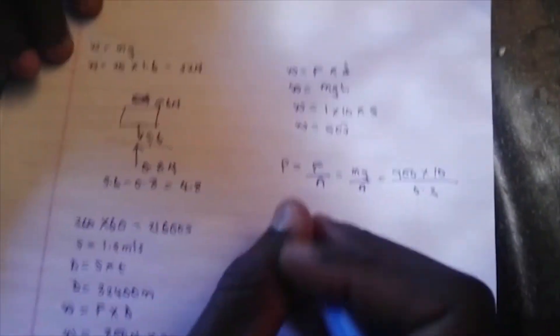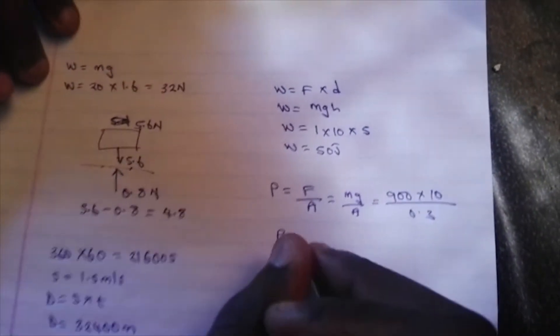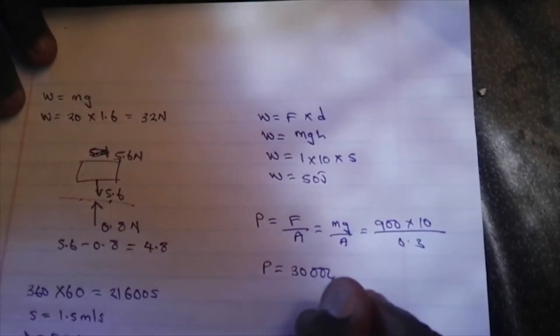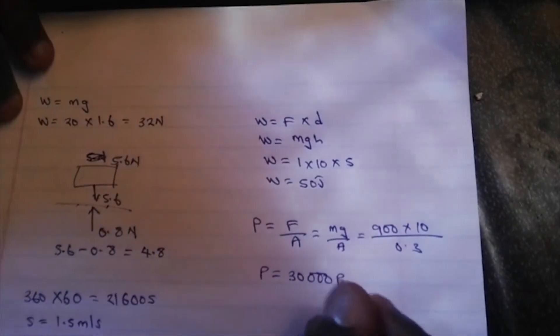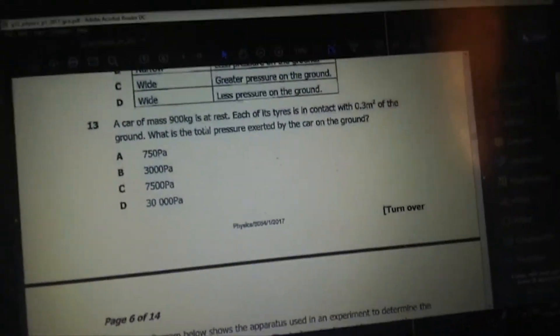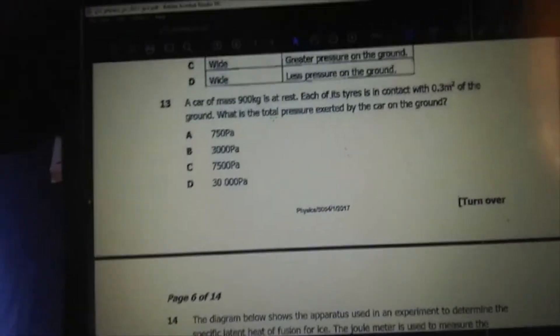That's 30,000 pascals. So the pressure is 30,000 pascals and the answer is D.